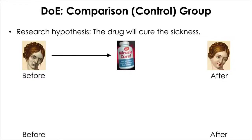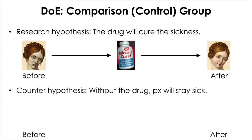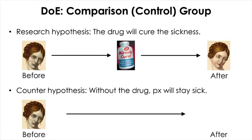Our research hypothesis is that we give the patient the drug and it appears to have treated the patient. But consider the counter hypothesis: if our research hypothesis is correct, then if we remove the drug, the patient should stay sick. So here is our patient again — we leave the patient without giving them anything, and they should stay sick. This way, we can make sure that it is the drug that cured whatever disease the patient had.